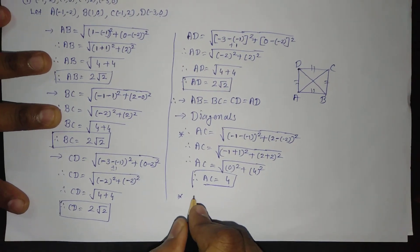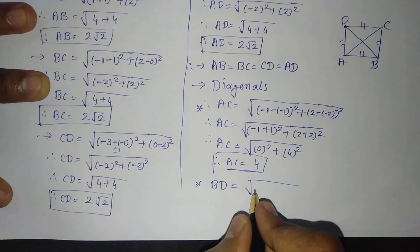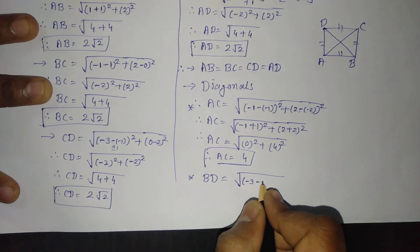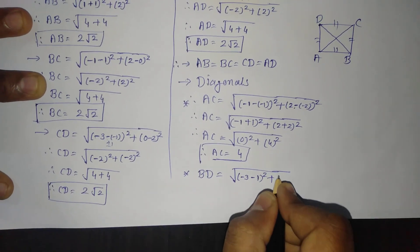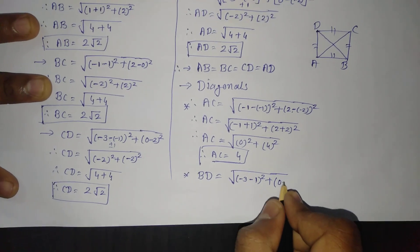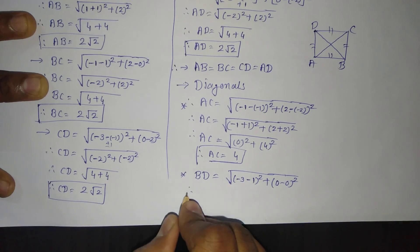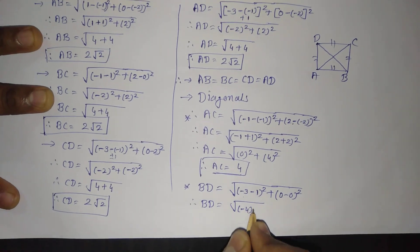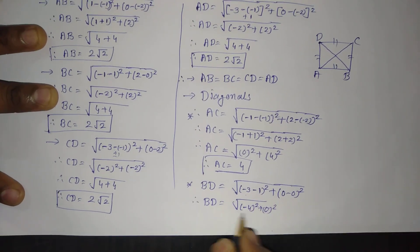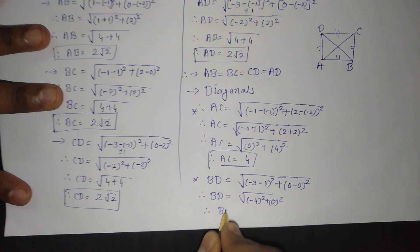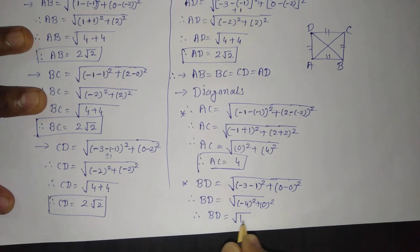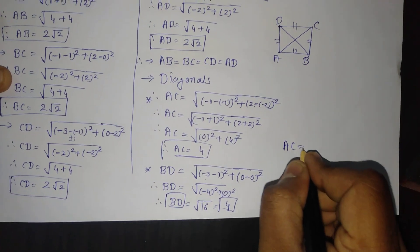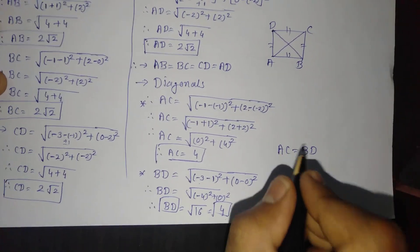Similarly, let us find the other diagonal BD. With B = (1, 0) and D = (-3, 0): BD = √((-3 - 1)² + (0 - 0)²) = √((-4)² + 0²) = √16. So BD is also equal to 4. Therefore AC = BD = 4.